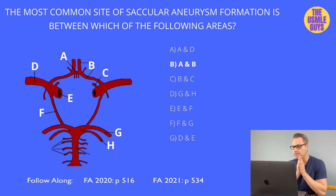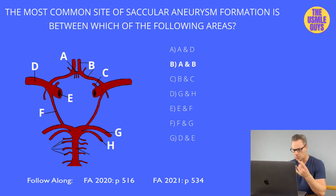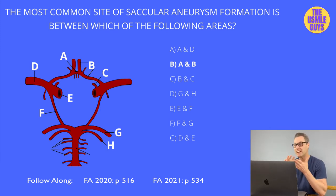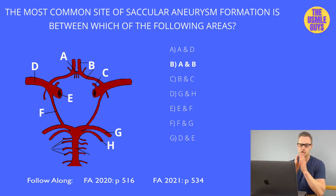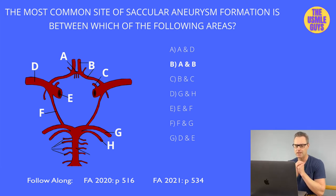Compression of the posterior communicating artery, identified by letter F, causes development of ipsilateral cranial nerve 3 palsy, which presents with ptosis in unresponsive pupils and an eye that looks down and out. There's another type of aneurysm known as the Charcot-Bouchard microaneurysm, a relatively common lesion associated with something chronic and uncontrolled.